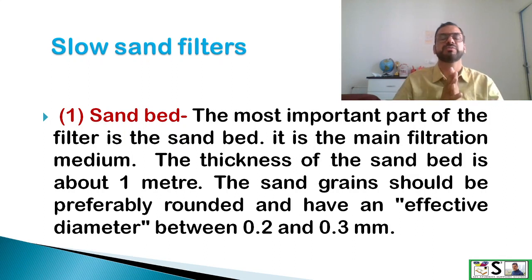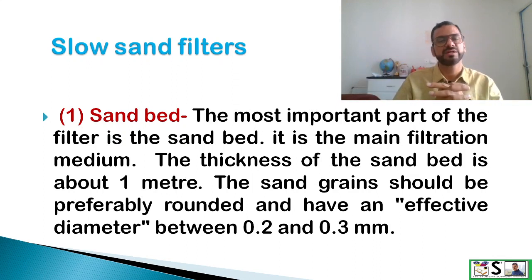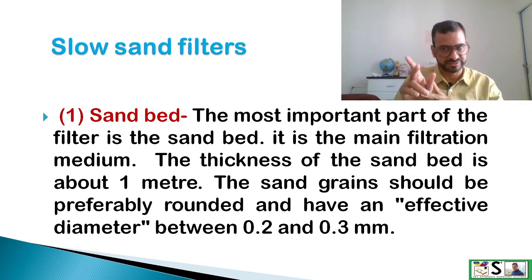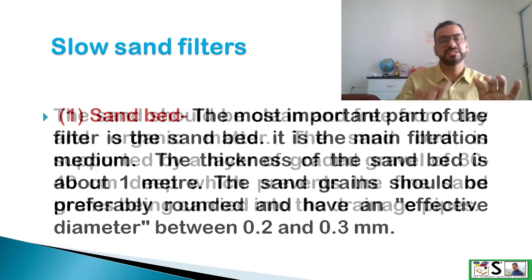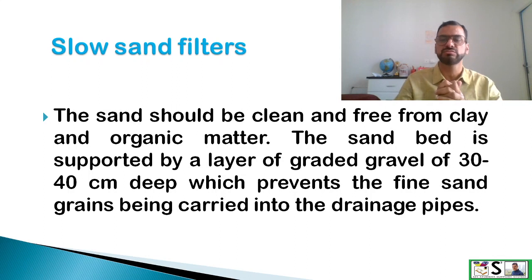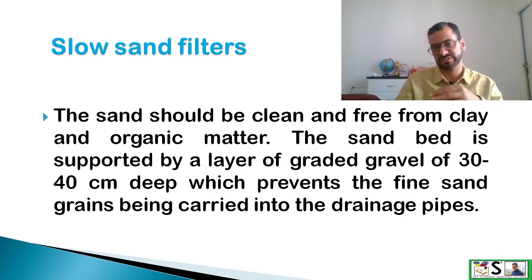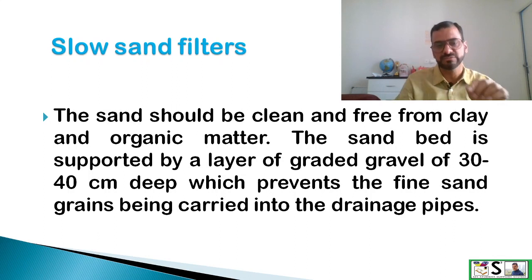The most important part of any filter is the sand bed, which is the same in both rapid and slow sand filters. The upper layer is fine sand of approximately 1 meter depth. The sand grains should be perfectly round with an effective diameter of 2 to 3 mm. This sand bed is supported by graded gravel of 30 to 40 cm depth, which prevents fine sand from being carried into the drainage pipes.